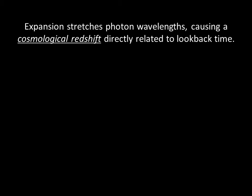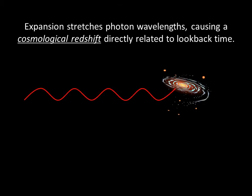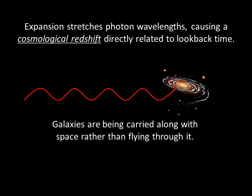An object's look-back time is directly related to its redshift. The expansion of the universe stretches out all the photons within it, shifting them to longer, redder wavelengths. We call this effect a cosmological redshift. We can think of the redshift as being caused by either the Doppler effect as the galaxy moves away from us, or from the expansion of space stretching the photons out. For very distant galaxies, it's preferable to interpret the redshift as coming from the expansion of space, because as space expands, galaxies are being carried along with it, rather than flying through it.